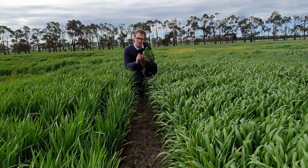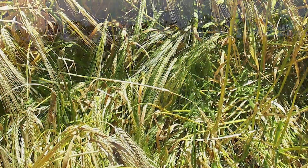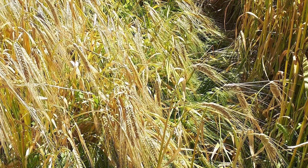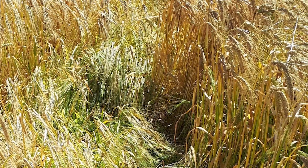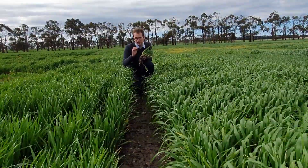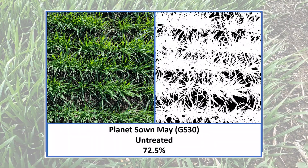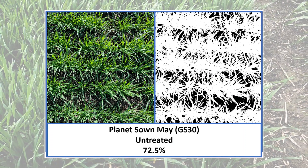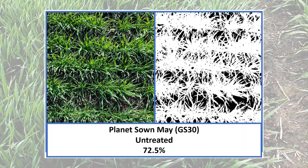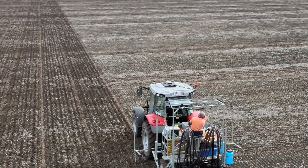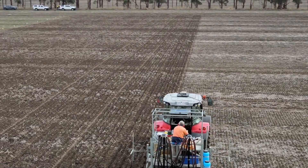One of the main yield constraints with winter barley is lodging. Another great lodging control is actually to sow later. Here's an example of Planet sown a month later than the examples presented here. It's now at growth stage 30 but hasn't reached canopy closure, so it's less likely to have shading and thin stems, and less likely to need a PGR in this scenario.